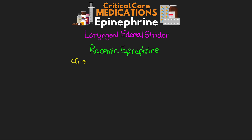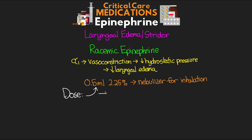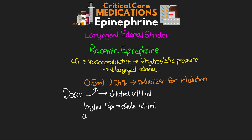Racemic epi's alpha-1 activation is going to lead to vasoconstriction of those capillary arterioles, decreasing the hydrostatic pressure there, which reduces laryngeal edema. Our racemic epi is usually found in 0.5 mLs of a 2.25% concentration, administered via nebulizer for inhalation. We often combine this with a steroid such as dexamethasone. The dosing is 0.5 mLs of the 2.25% diluted with 4 mLs of saline. If using 1 mg per mL epinephrine instead, dilute that 1 mg with 4 mLs. If using 0.1 mg per mL, no dilution is necessary. Importantly, you're going to see an onset of action in about a minute.